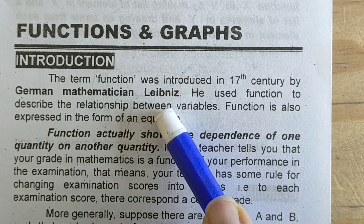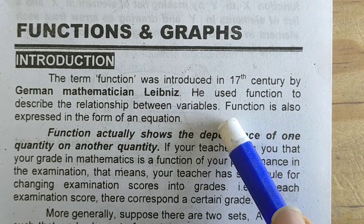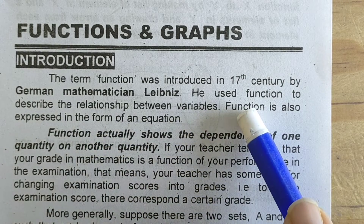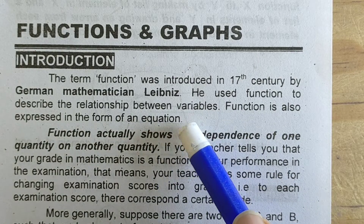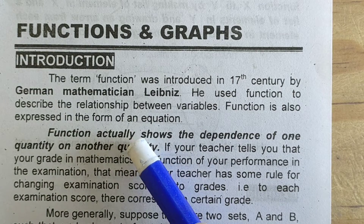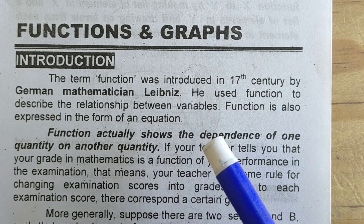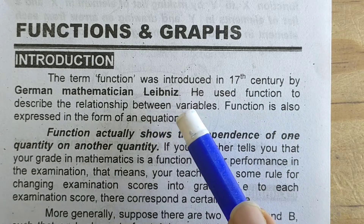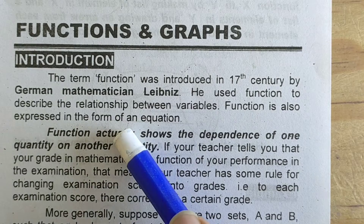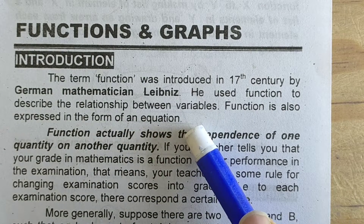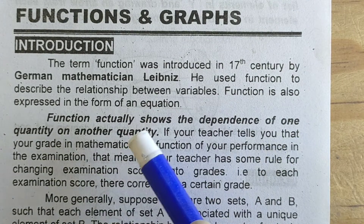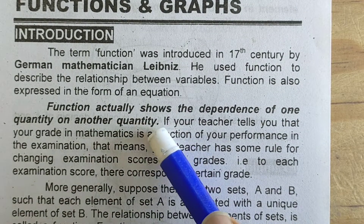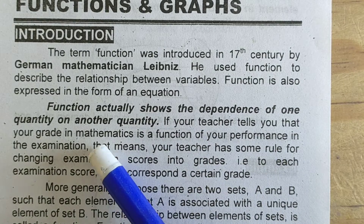Leibniz was the one who used this term 'function.' He used function to describe the relationship between variables. Function is also expressed in the form of an equation. Function actually shows the dependence of one quantity on another quantity.